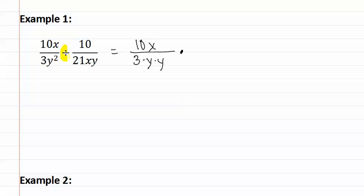Remember we then turn our division into a multiplication and we take our second fraction and we are going to invert it or find the reciprocal, which means we will have 21xy over ten.